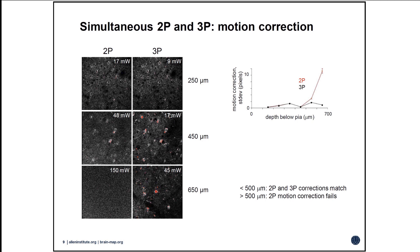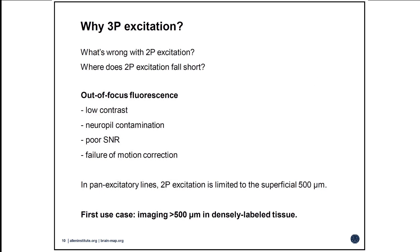At the point where contrast becomes so poor that motion correction and segmentation break, there's very little we can do with the two-photon data. For us, that break occurs at about 500 microns. So we can get to about half the depth of cortex with two-photon and then switch to three-photon microscopy. One surprise was that we actually tend to use lower laser powers for three-photon than two-photon microscopy — thermal heating was not the problem I anticipated.